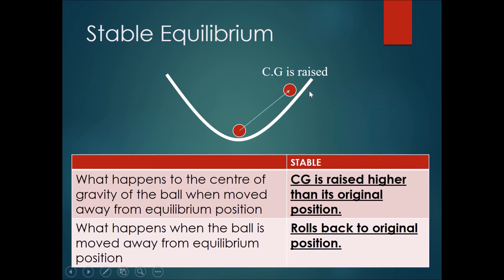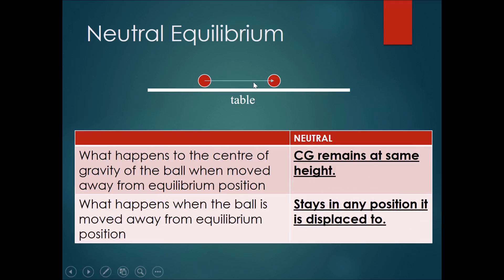If we invert the situation and the ball is inside a bowl, when you move the ball a little bit to the side, the center of gravity is raised higher than its original position. When you release the ball, it rolls back into the bowl and comes to a stop at its original position — this is the definition of a stable equilibrium. If a ball is on a perfectly flat table and you push it across and let go, the center of gravity remains at the same height. It will stay in the position it was displaced to — this is the definition of neutral equilibrium, because the ball does not continue rolling, nor does it roll back to its original position.